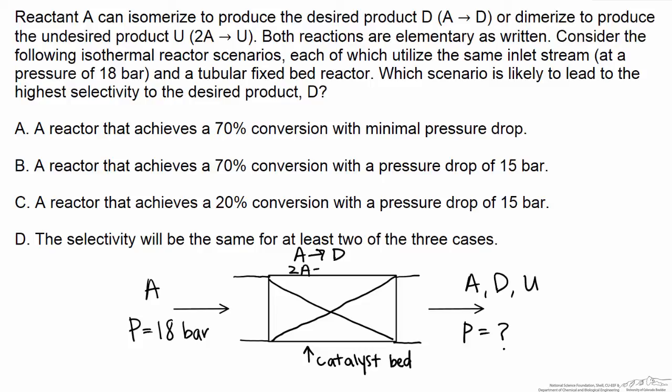Or we can have a reaction to the undesired product that involves the collision of two A molecules, so a dimerization, and so we expect that reaction to be second order in A.